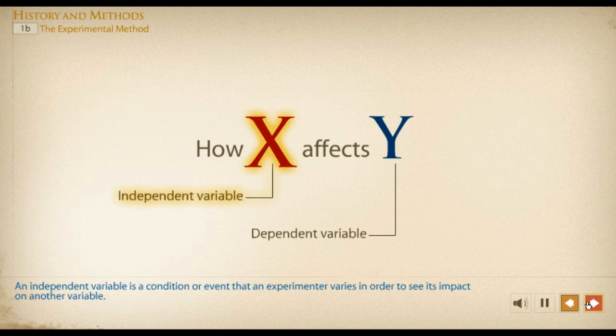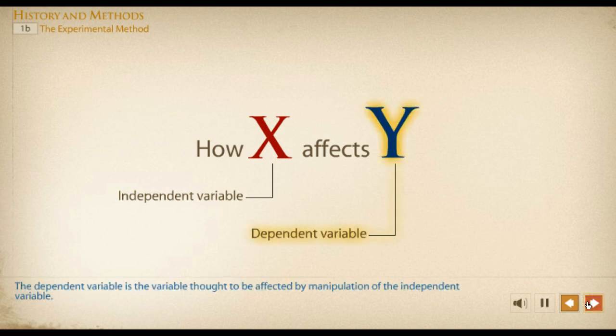An independent variable is a condition or event that an experimenter varies in order to see its impact on another variable. The dependent variable is the variable thought to be affected by manipulation of the independent variable.